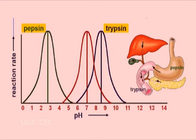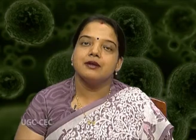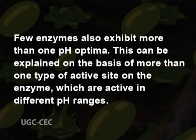Whereas trypsin is found in the duodenum (small intestine), hence its optimum pH is 8 to 9, which matches that of the duodenum. Certain enzymes exhibit a range of optimum pH, which is possible if slow ionization of groups on active sites occurs. Few enzymes also exhibit more than one pH optima, explained on the basis of more than one type of active site on the enzyme which are active in different pH ranges. The optimum pH and the two half-pH optima — the pH at which activity is half the maximum — are used to characterize enzymes.